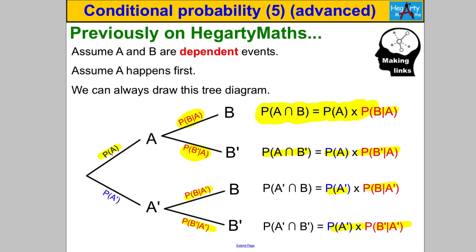The key formula to focus on is: P(A∩B) = P(A) × P(B|A). This makes sense from the tree diagram — assuming A happens first, the probability of both A and B occurring is P(A) multiplied by the probability of B happening given A has happened.